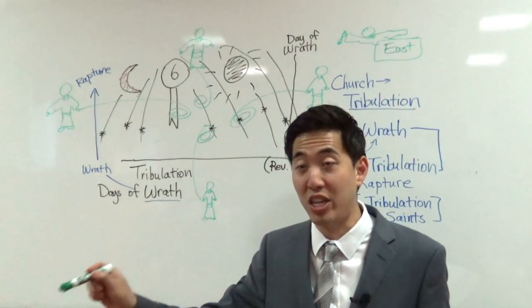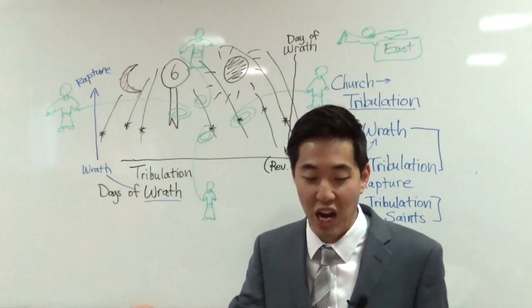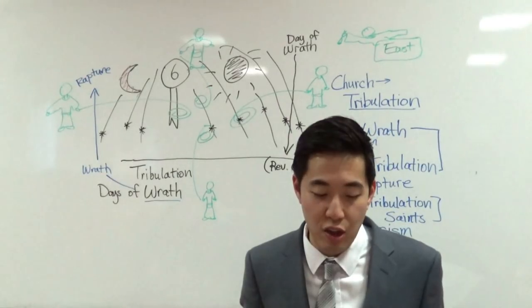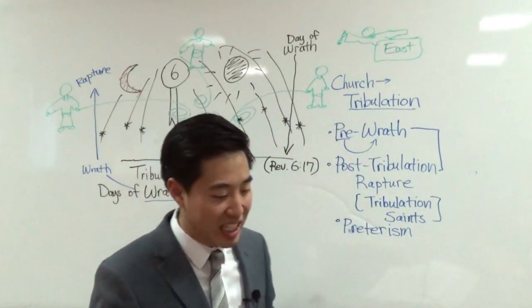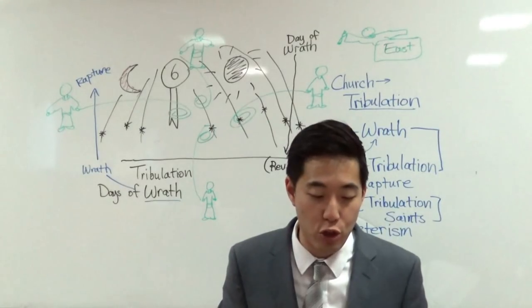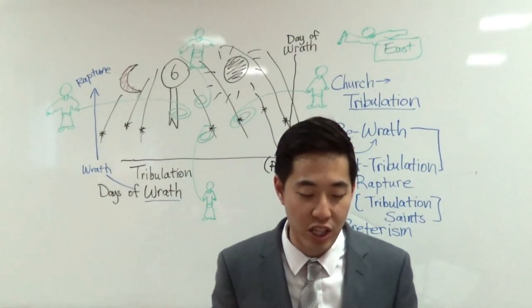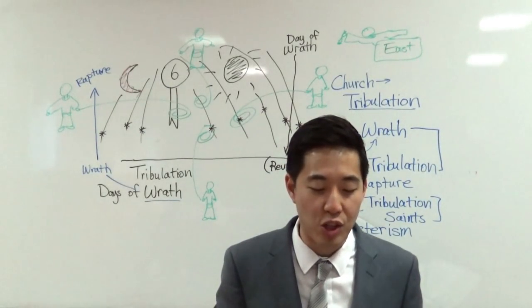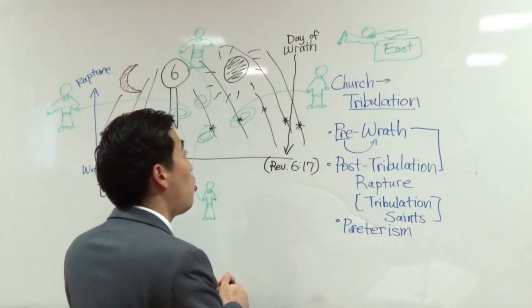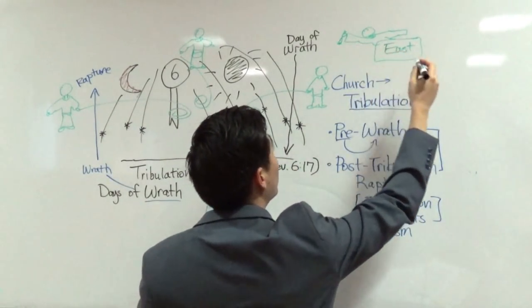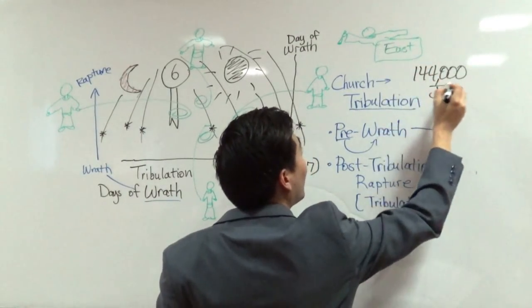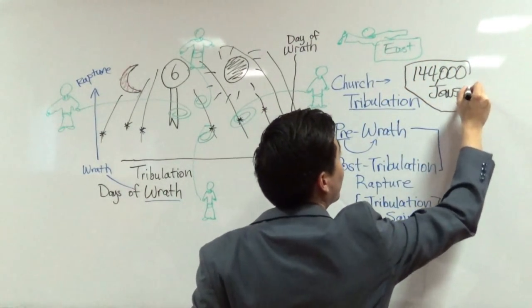So these winds are going to hit earth, sea, and trees. You're going to see hurricanes, typhoons, tornadoes, all this kind of stuff happening. It's going to be big. Till we have, what? Sealed the servants of our God in their foreheads. Looks like that this angel is sealing the servants of God on their forehead. What are they? Verse 4. The Jews. And I heard the number of them which were sealed. Who are they that are sealed? There were sealed 144,000 of all the tribes of the children of Israel.